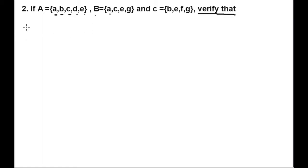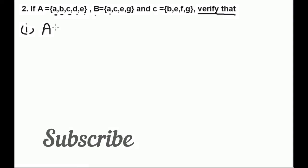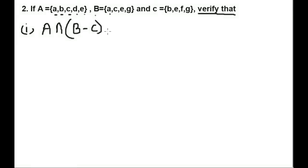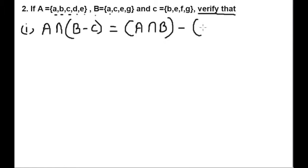We need to verify that A intersection (B minus C) is equal to (A intersection B) minus (A intersection C).